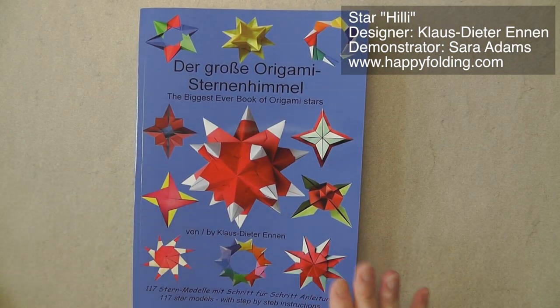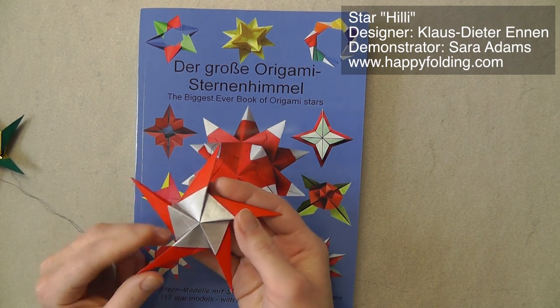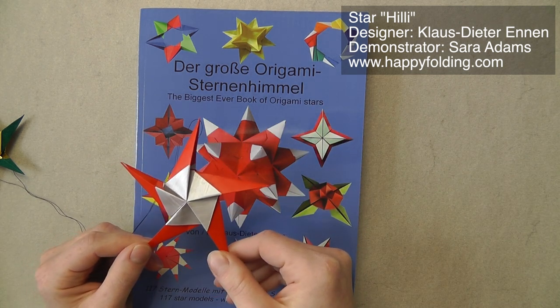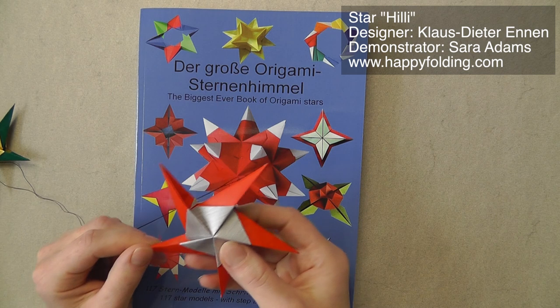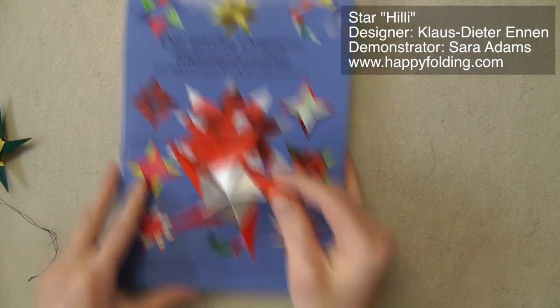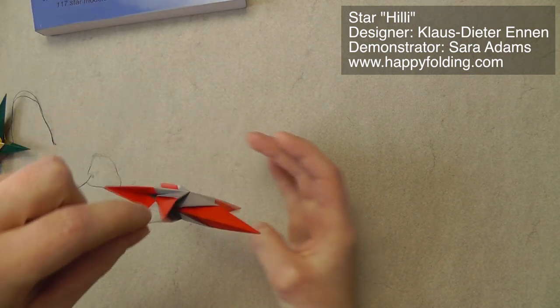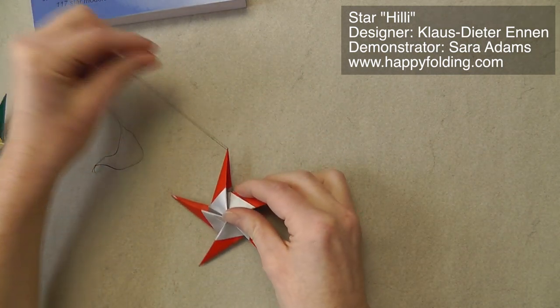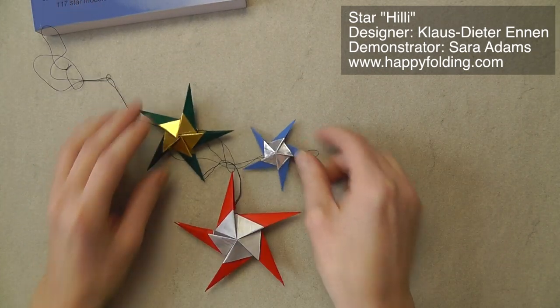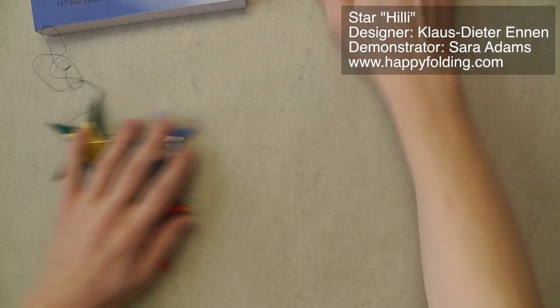Now, this star right here isn't actually included in the book because it's a brand new design, but diagrams are on Klaus-Dieter's website, and this star nicely shows off his style. Here you can see I folded this star and threaded it so that you can hang it, perhaps from a Christmas tree. When you do different colors and sizes, you can create a nice constellation.